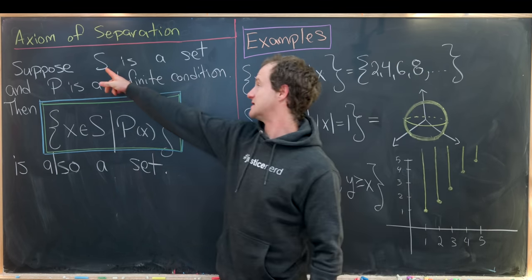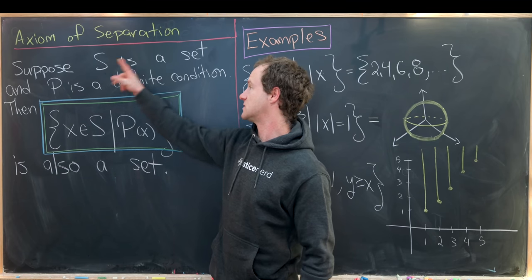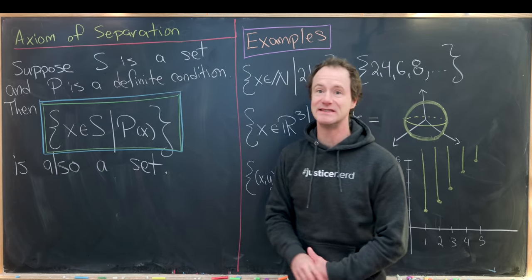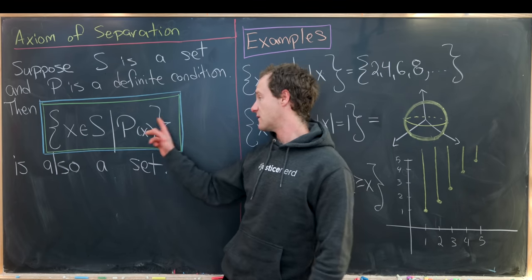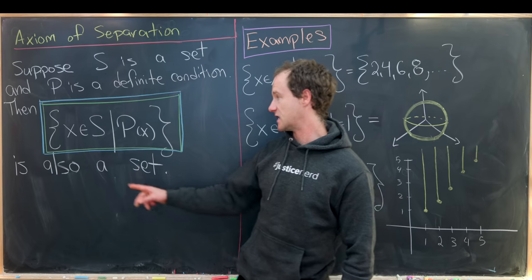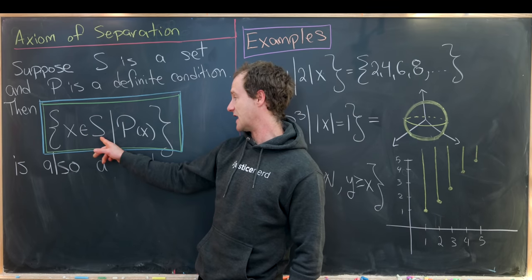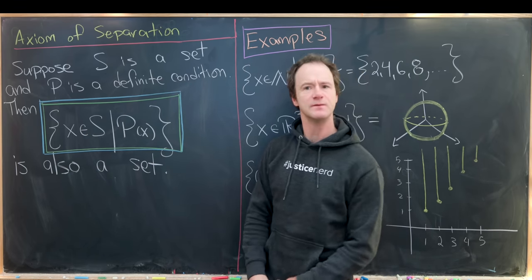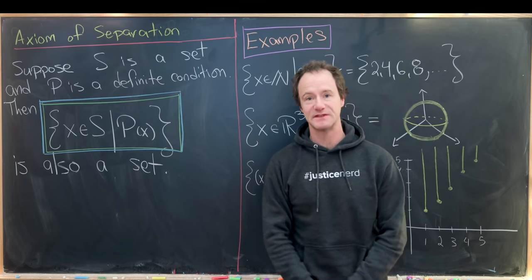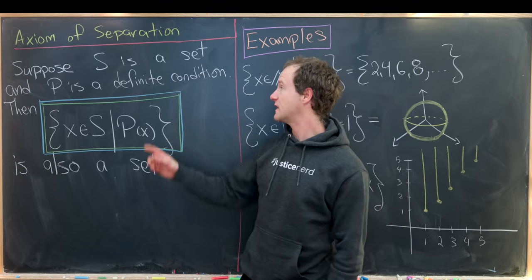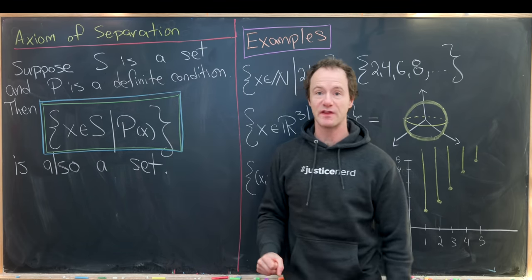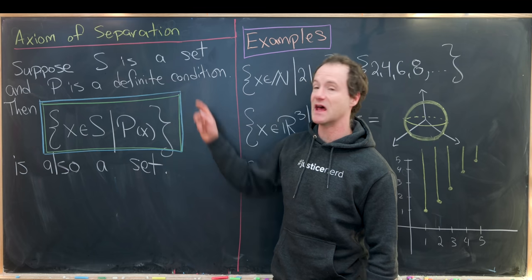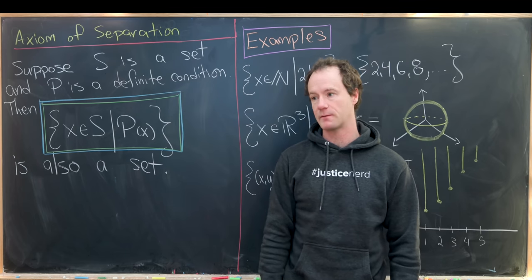That says that if you have a set, so let's suppose that S is a set and P is a definite condition, then the following collection is also a set. So this is all X in S where X satisfy that definite condition. So why is this called the axiom of separation? Well, you can think of it like this: we're starting with a set and we're separating off the elements from that set that satisfy whatever condition we're working on.